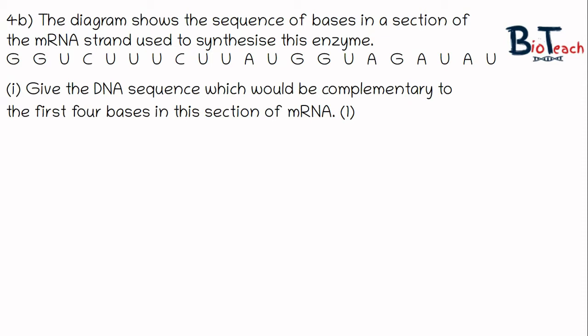You've got to be quite careful with this. Again, anyone who gets this wrong hasn't read the question properly. The first four bases are G, G, U, and C, and so the complementary bases on the DNA have to be C, C, A, and G. Remember there's no T in mRNA as uracil replaces it.